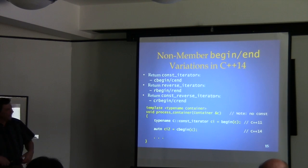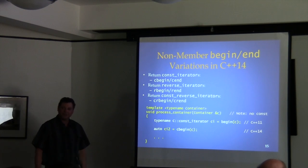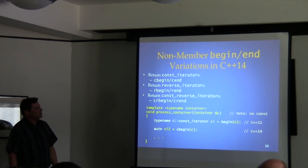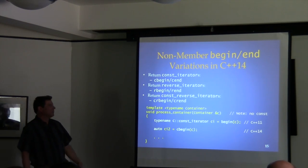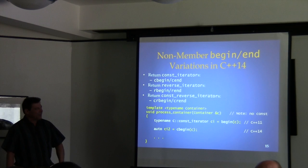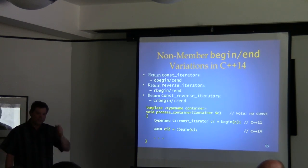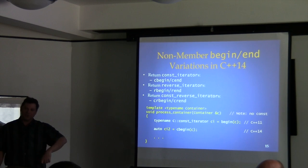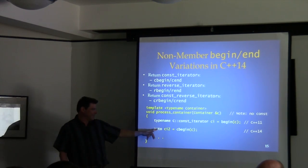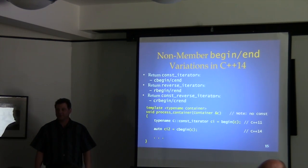The first C++14 slide: C++14 adds natural variations of the non-member functions — `cbegin` and `cend`. Now if we have a non-const container but want a const iterator, we can just say `auto it = cbegin(container)` instead of having to declare `Container::const_iterator`. It works.